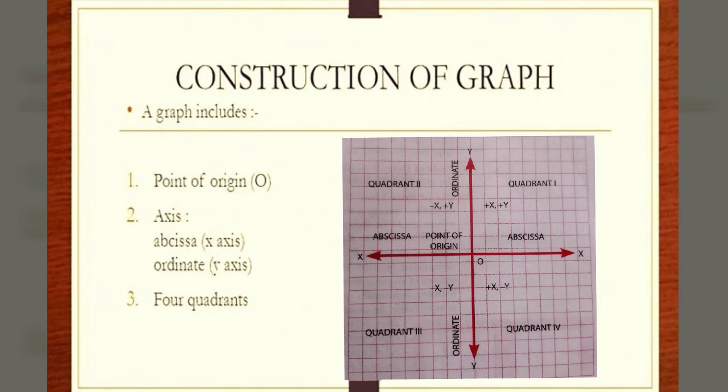A graph includes point of origin. That point is named as O in the graph you can see. Axes: abscissa is x-axis and ordinate is y-axis. And there are 4 quadrants: quadrant number 1, 2, 3 and 4.